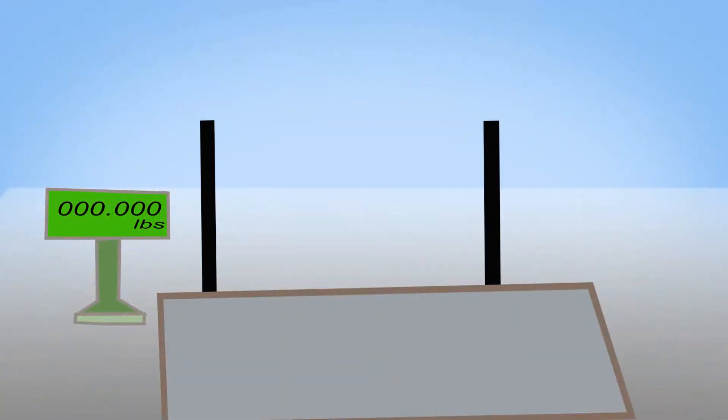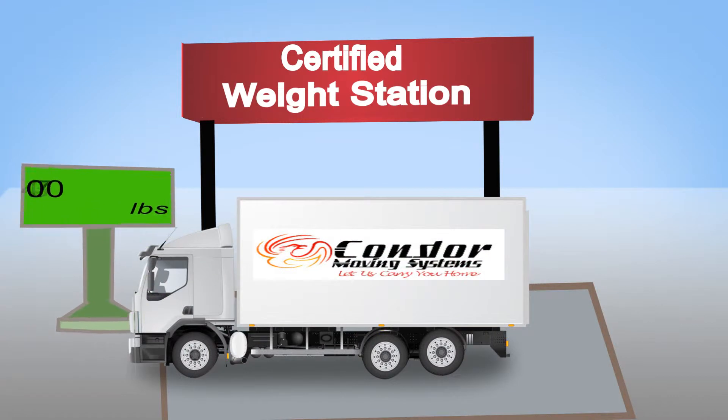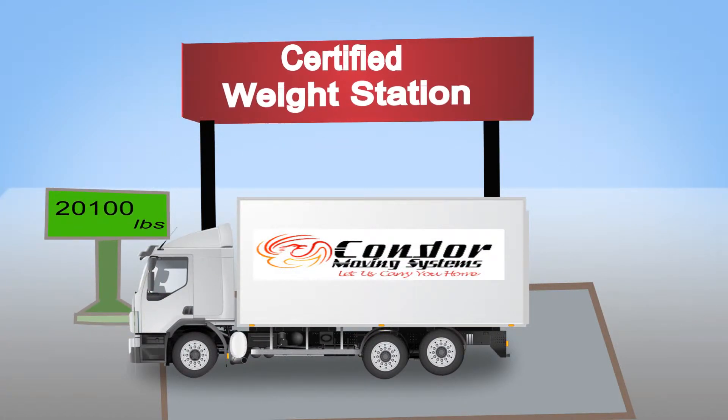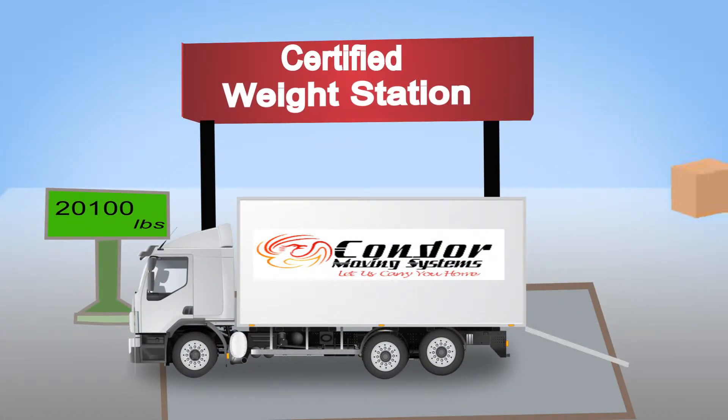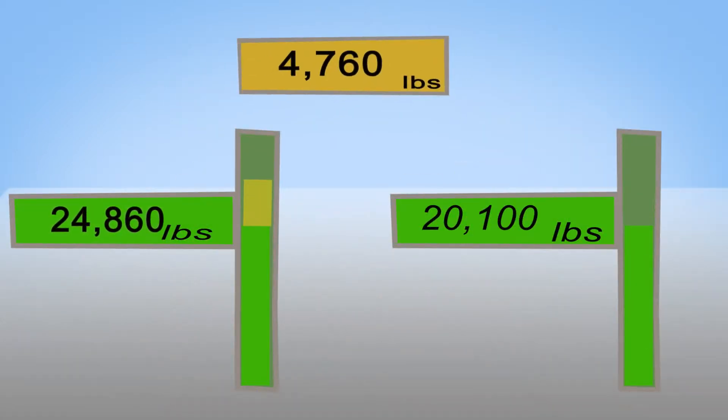On moving day, the actual weight of a shipment is obtained by weighing the truck at a certified weigh station prior to loading the customer's items and weighing again after loading. The difference of the two weights is the actual weight and how final charges are determined.